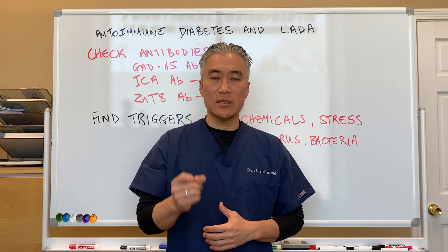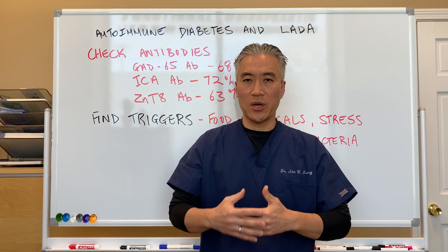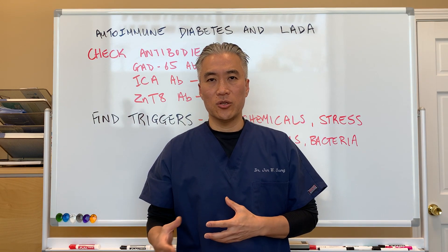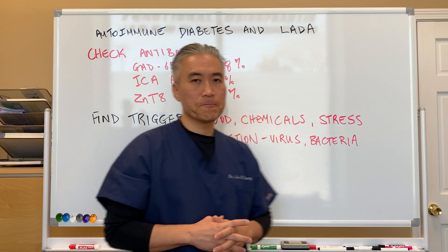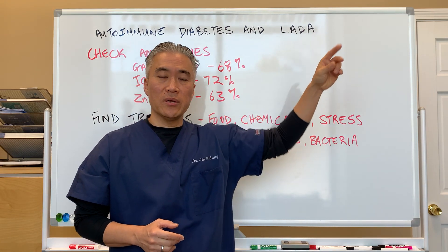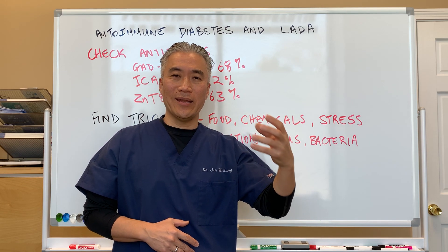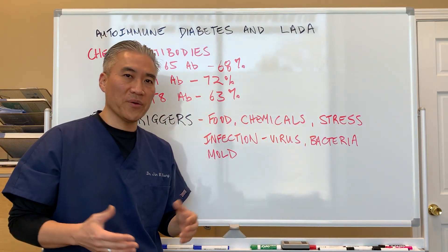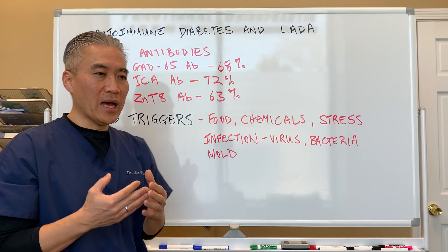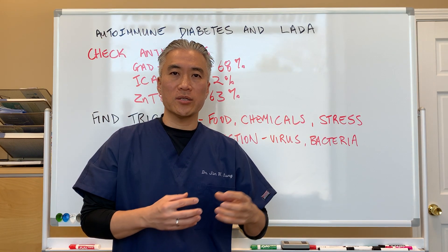Today we're going to talk about the clinical management of autoimmune diabetes. When we look at patients who come in, we have to first distinguish what category they fit in terms of their diabetic condition. We're going to talk about autoimmune diabetes, or LADA — latent autoimmune diabetes that comes on in adulthood — also called type 1.5. For those patients, we have to check antibodies to determine if an immune process is attacking tissue in the body and causing the diabetes.